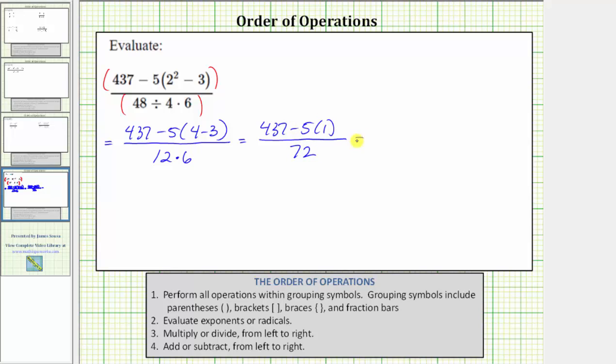And now going back up to the numerator, we multiply before we subtract. Five times one is five. The numerator simplifies to 437 minus five.